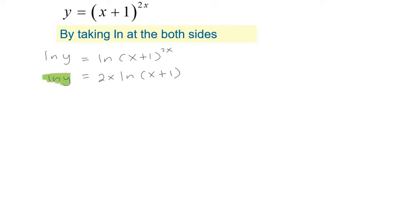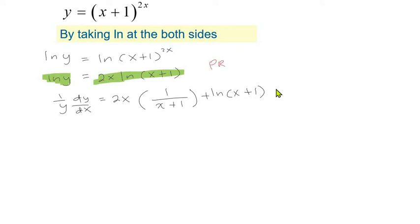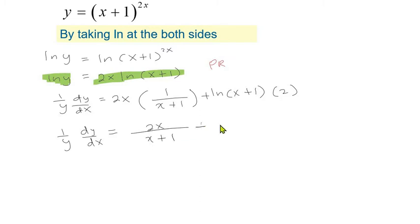Differentiating the left hand side, we get 1/y times dy/dx. For the right hand side, we have to use the product rule. So u is 2x and v' is 1/(x+1), plus v times u' which is 2. Rearranging, we have (1/y)(dy/dx) = 2x/(x+1) + 2 ln(x+1).